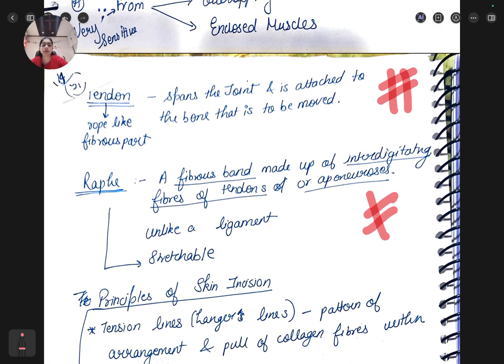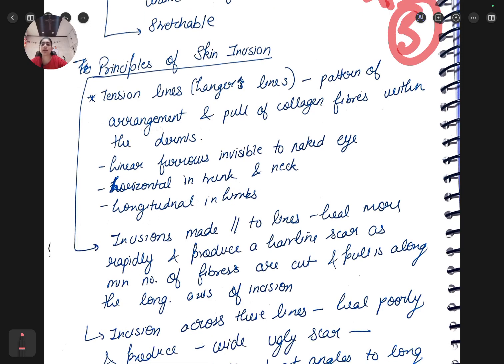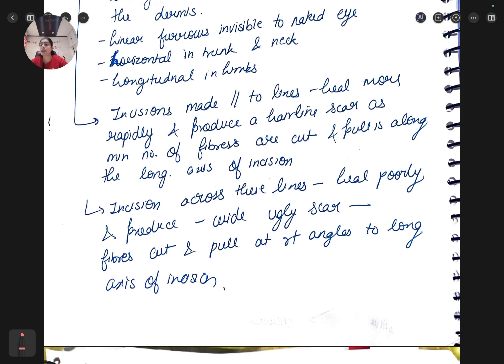Principles of skin incision is a five marker question. Tension lines, Langer lines - pattern of arrangement and pull of collagen fibers within the dermis. Linear furrows which are invisible to the naked eye. Horizontal in trunk and neck, longitudinal in the limbs. Incisions are made parallel to these lines. If I make an incision parallel, there will be no damage and if I make perpendicular these will get damaged and take time to heal. Incisions across these lines heal poorly and wide ugly scar would form.